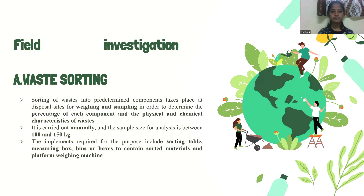The first is waste sorting — sorting of waste into predetermined components, which takes place at the disposal sites. This is done for weighing and sampling, which helps determine the percentage of each component present in the waste. It also allows us to determine the physical and chemical characteristics of that waste. It is usually carried out manually.